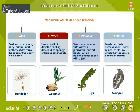Dispersal by water. Seeds and fruits develop floating devices like spongy or fibrous outer coats. Dispersal by explosive mechanisms. Seeds are provided with valves or jackulators — curved hooks — which help to scatter seeds with a jerk.